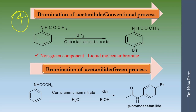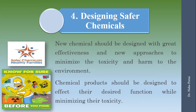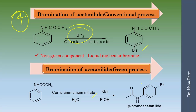The fourth example is bromination of acetanilide. You want to substitute one bromine to get para-bromoacetanilide. In the conventional process, liquid bromine is used, which is clearly a non-green compound. In the green process, ceric ammonium nitrate (CAN) is used instead to obtain the bromo compound.